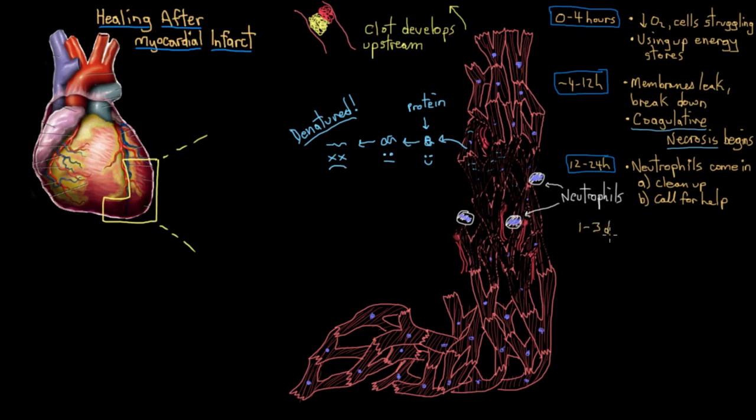So now a little bit later, between about one to three days, the cavalry arrives. There's lots of neutrophils around now. So you've got your cardiomyocytes still degenerating, their nuclei are going away, their striations are disappearing, and your neutrophils are just everywhere. They're just taking apart or lysing the dead cardiomyocytes.